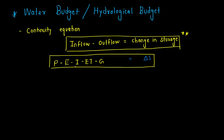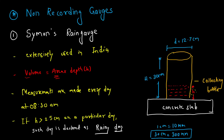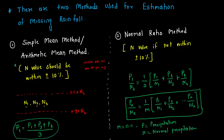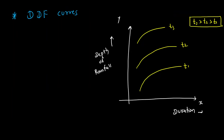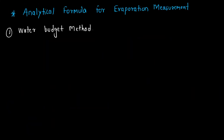Subtracting all losses gives the change in storage. For example, in a reservoir, if the initial level is S1 and water evaporates causing the level to drop to S2, the change in storage is delta S, which equals S1 minus S2. The input is only precipitation; everything else is a loss. Using the water budget equation, if all other values are known, we can find the value of evaporation.